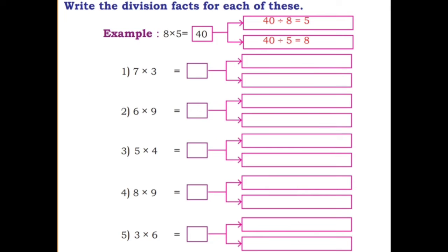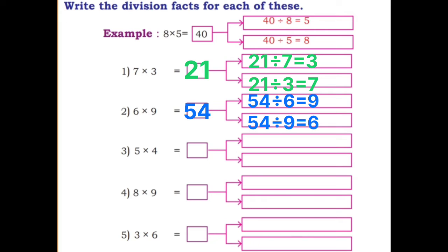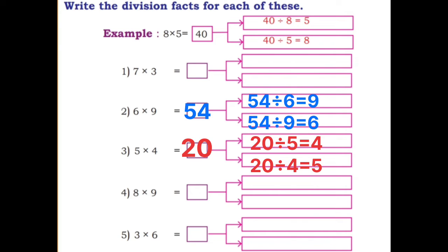Write the division facts for each of these. Example: 8 into 5 is 40, so 40 divided by 8 is equal to 5, and 40 divided by 5 is equal to 8. Next, 7 into 3 is equal to 21: 21 divided by 7 is equal to 3, and 21 divided by 3 is equal to 7. Next, 6 into 9 is equal to 54: 54 divided by 6 is equal to 9, and 54 divided by 9 is equal to 6.